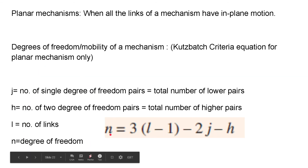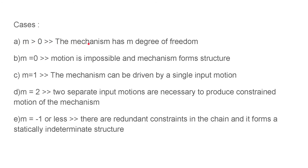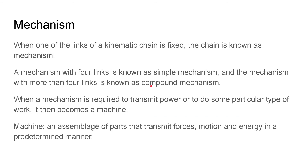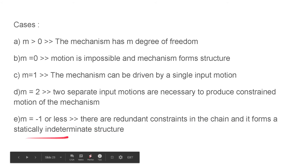Let m (or n) denote the degrees of freedom. When m is greater than zero the mechanism has m degrees of freedom. When m equals zero, motion is not possible and it becomes a truss or rigid structure — like a bridge. When m equals one, the mechanism can be driven by a single input motion. When m equals two, two separate input motions are necessary to produce constrained motion.